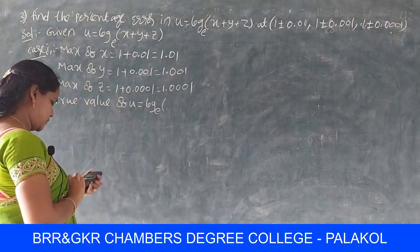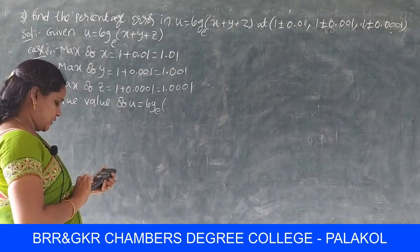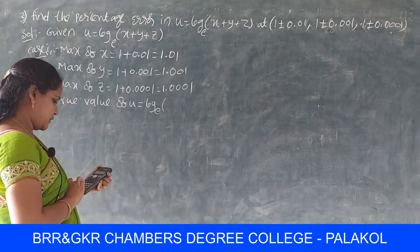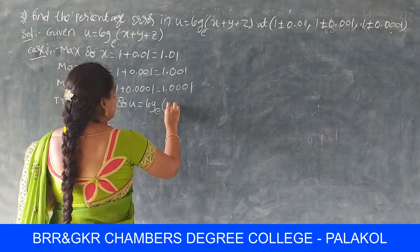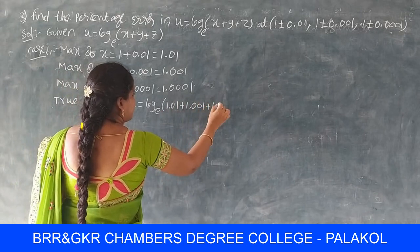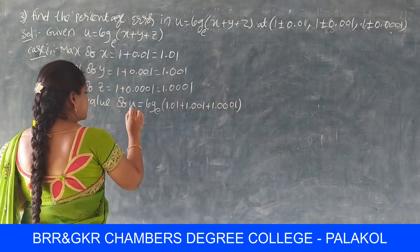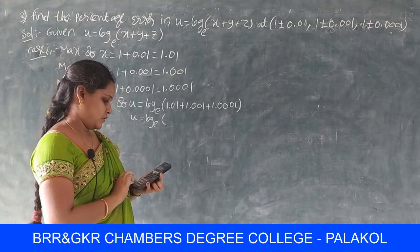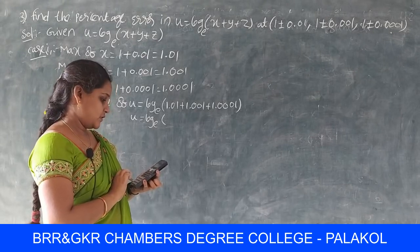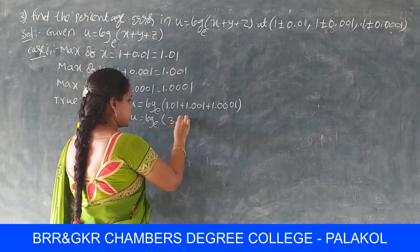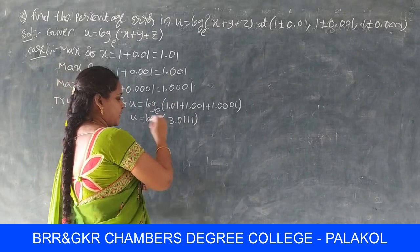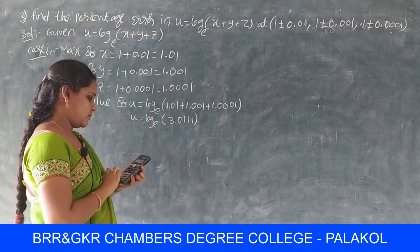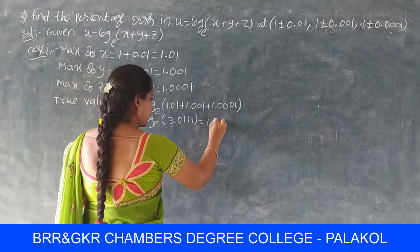True value of U = log(x + y + z) = log(1.01 + 1.001 + 1.0001). Adding these: 1.01 + 1.001 + 1.0001 = 3.0111. Using the calculator, log(3.0111) base e = 1.1023. This is the true value, capital X.